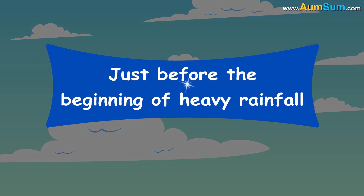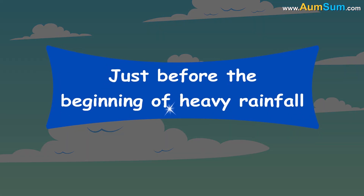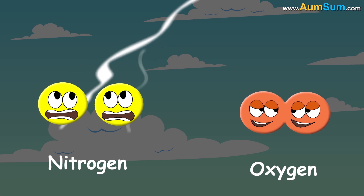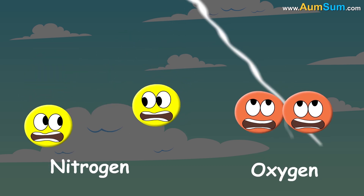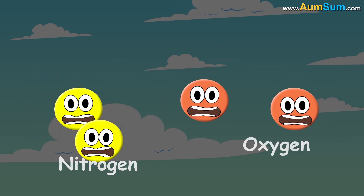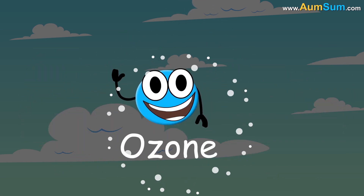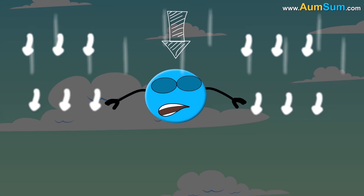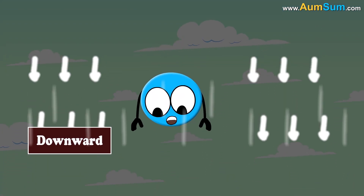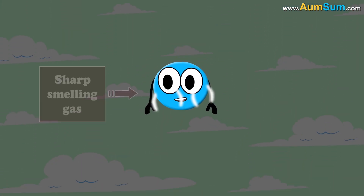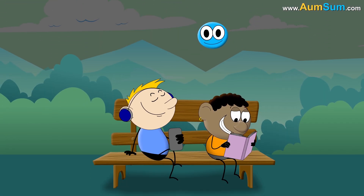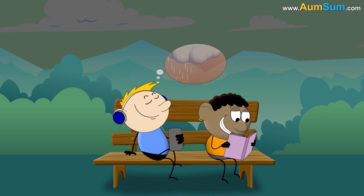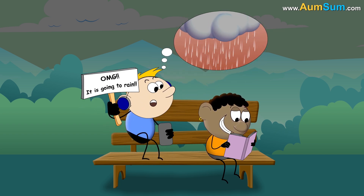The first case occurs just before the beginning of heavy rainfall. Lightning bolts split nitrogen and oxygen molecules, eventually producing ozone. Strong blowing winds carry ozone downward along with them. Ozone is a sharp smelling gas. When a person smells this ozone, it helps him predict the rain.